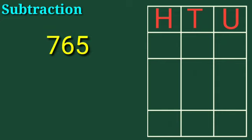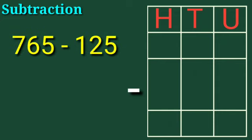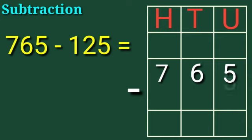765 minus 125. Children, 5 is under the units column, 6 is under the tens column, 7 is under the hundreds column. 5 is under the units column, 2 is under the tens column, 1 is under the hundreds column.